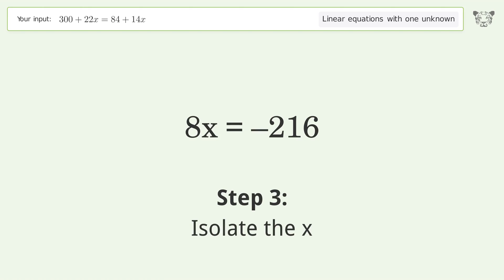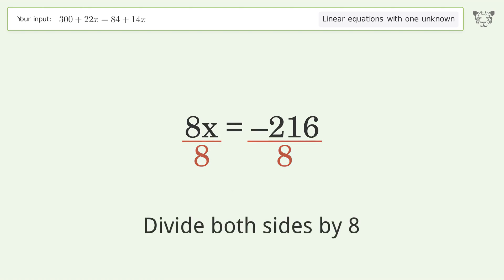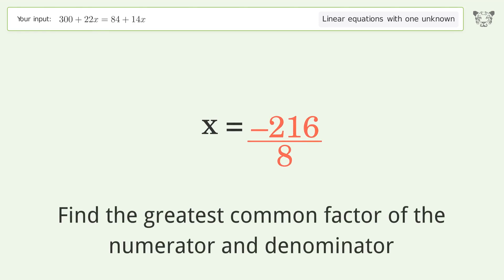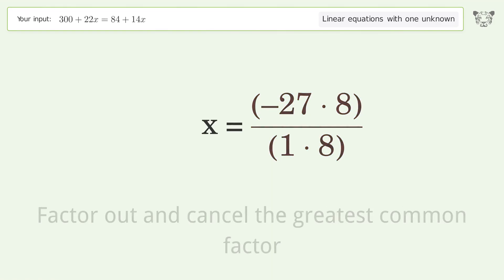Isolate the x. Divide both sides by 8. Simplify the fraction. Find the greatest common factor of the numerator and denominator. Factor out and cancel the greatest common factor.